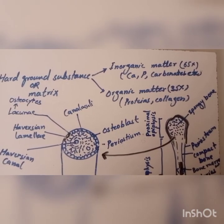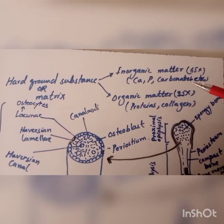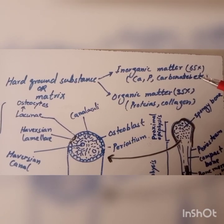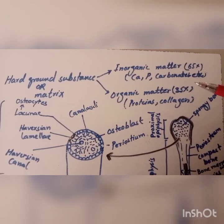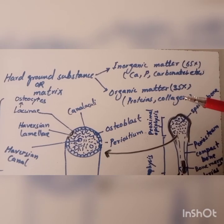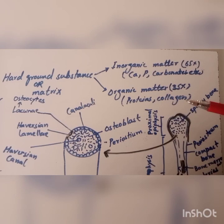In humans the matrix consists of inorganic matter, that is 65%, having calcium, phosphates and carbonates. While the organic matter, that is 35%, contains proteins and collagen.